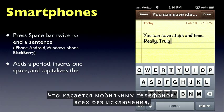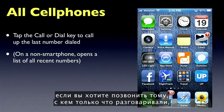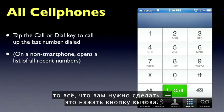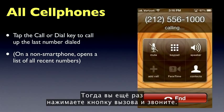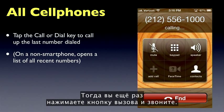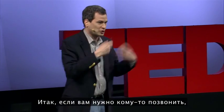Also, when it comes to cell phones, on all phones, if you want to redial somebody you've called before, all you have to do is hit the call button and it puts the last phone number into the box for you. Then you can hit call again to actually dial it. So you don't need to go into the recent calls list — just hit the call button again.